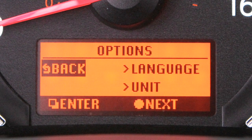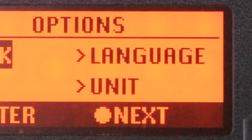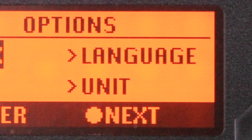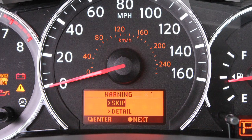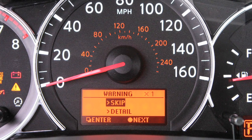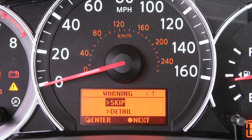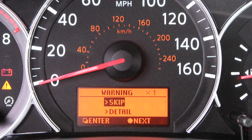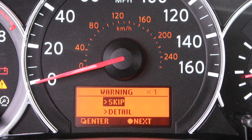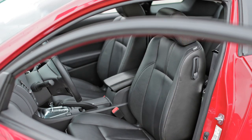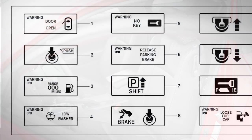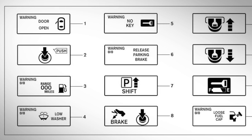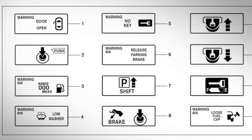The options menu allows you to change the language and measurement unit used in the system. The vehicle information display will also display any warnings about vehicle conditions that may exist. Warnings can be present for issues such as an open door or low fuel. For the entire list of indicators and warnings, consult your Owner's Manual.